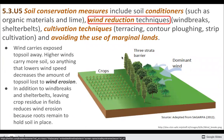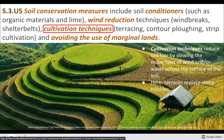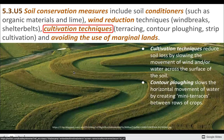Wind reduction techniques include tree barriers to reduce wind, and placing detritus on the soil in between crops, as we saw earlier. We can also build terraces or plant along the contour of slopes rather than up and down them. These strategies mostly help reduce erosion, but don't necessarily make the soil more fertile.